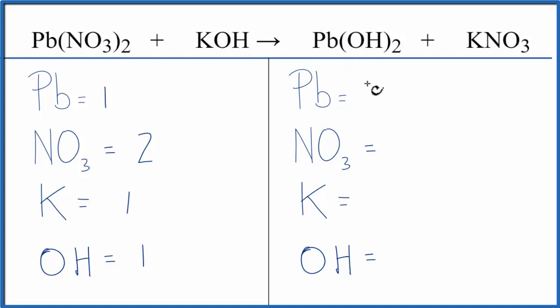Product side, 1 Pb, 1 NO₃, 1 potassium, and the OH, the hydroxide, we have two times the one, two of those.